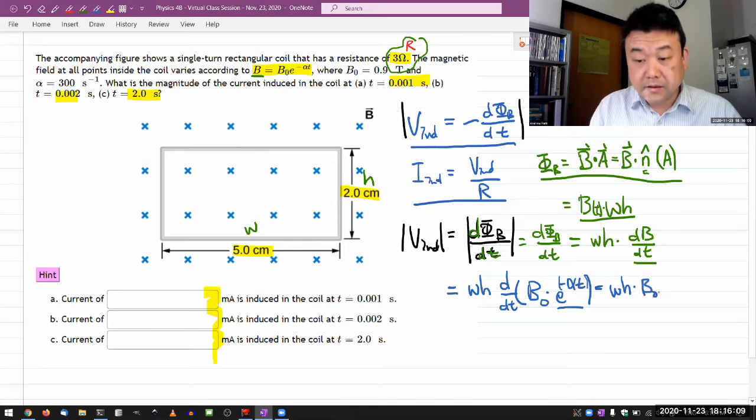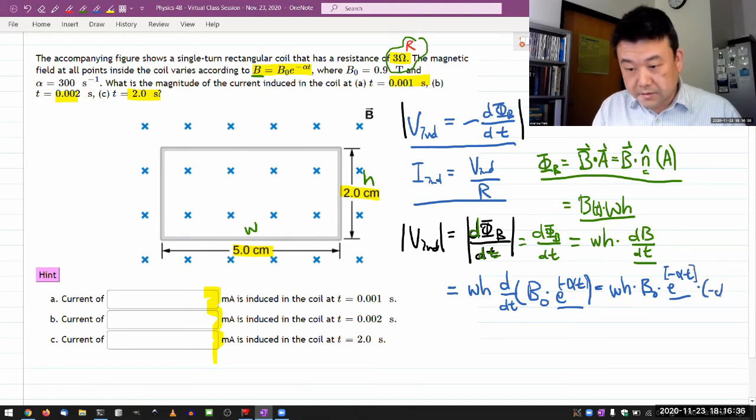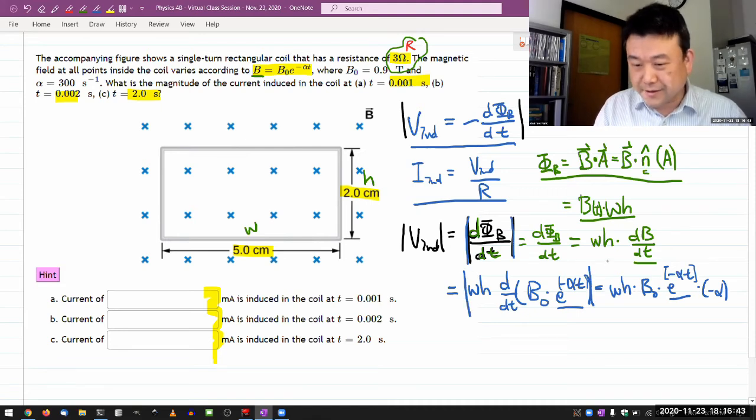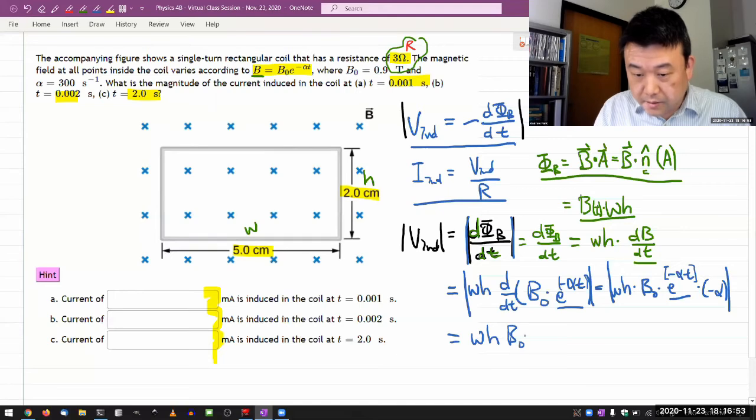The area times magnetic B naught and times the factor that comes out from the derivative. The derivative of the outside will just give me the exponential back, the exact same exponential, times the derivative of the inside with respect to time. So since t is linear, it's just going to be minus alpha. I gave myself a reminder, I'm going to be taking the absolute value just at every step. I don't want to worry about signs here. So induced voltage is going to be wh times B naught times alpha times e to the minus alpha t.